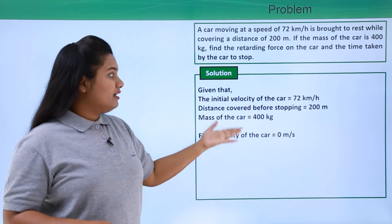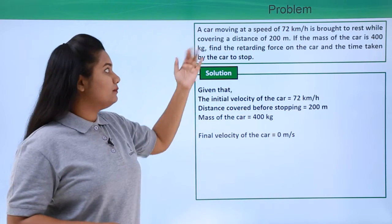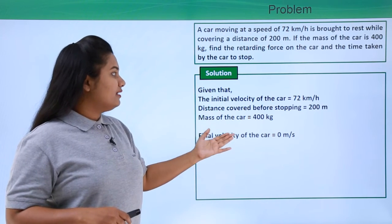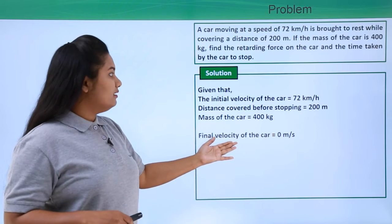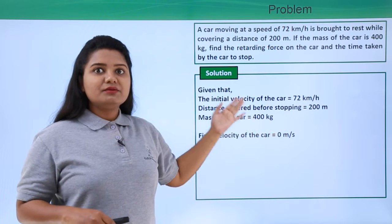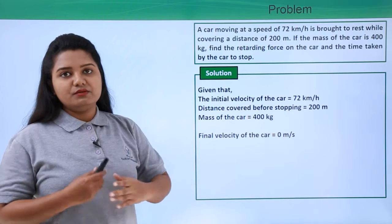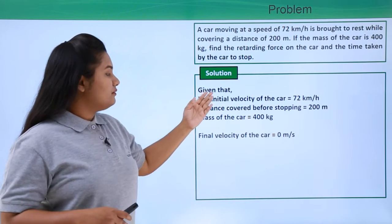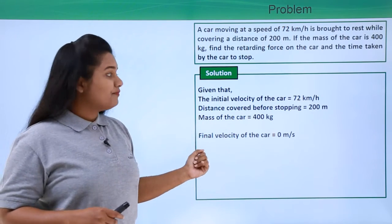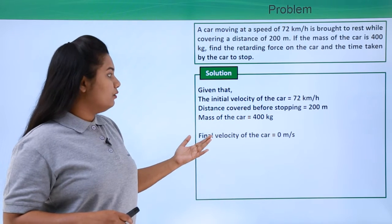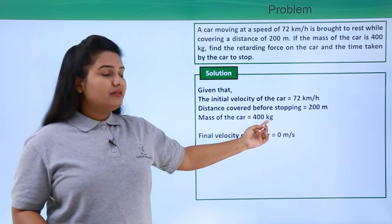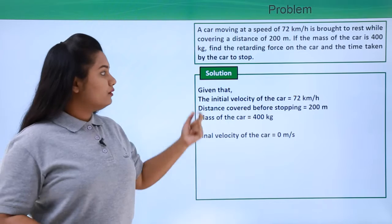This is the first step in solving a physics problem — to list out every piece of information provided by the question. The second step is to check if any conversions are required. For example, the initial velocity is given in kilometers per hour, which is not in SI units. We need to convert it to SI units before proceeding. The distance is already in meters and the mass is in kilograms, both SI units.